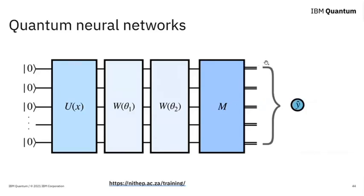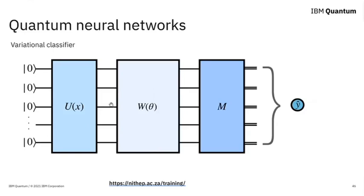Once you measure your system, then of course you get classical information, and the last step is to just figure out how to manipulate this classical information such that you have a prediction or a label for your machine learning task. This is an overview of the framework of machine learning models. This is also sometimes referred to as a variational classifier. It's a quantum neural network, or a variational classifier, because it's a variational model - it depends on parameters - and it does classification tasks, typically.